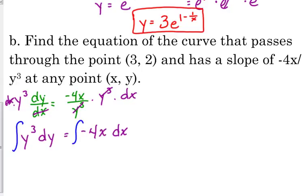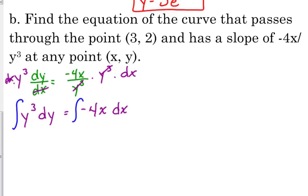We have y cubed dy equals negative 4x dx. Integrate. Antiderivative of y cubed is y to the fourth over 4. Antiderivative of negative 4x would be negative 2x squared plus c.